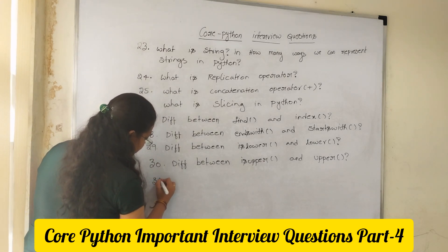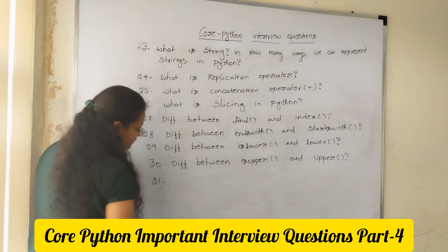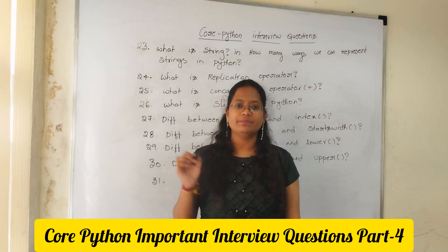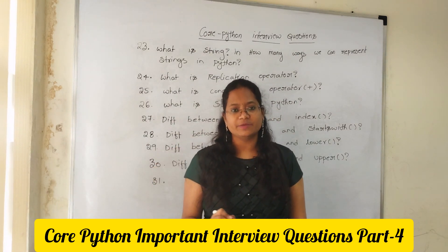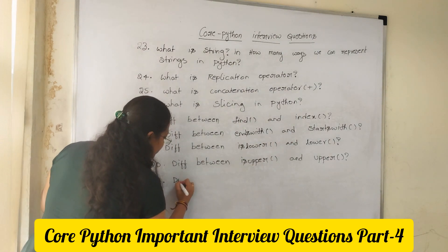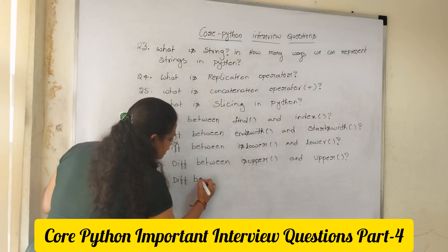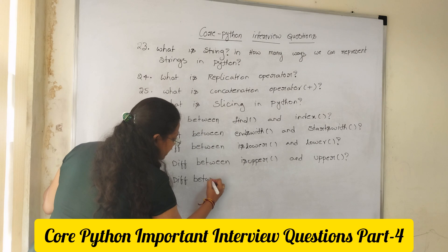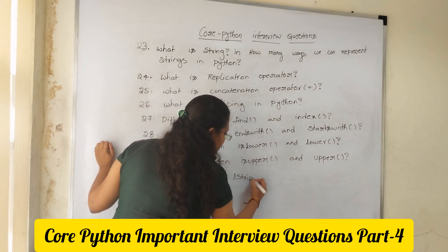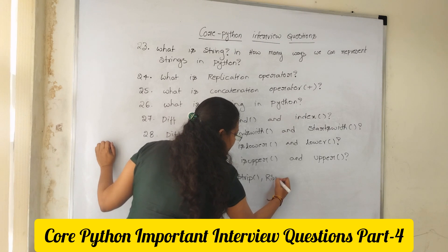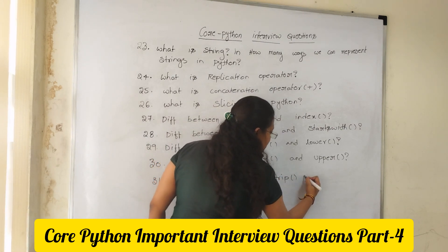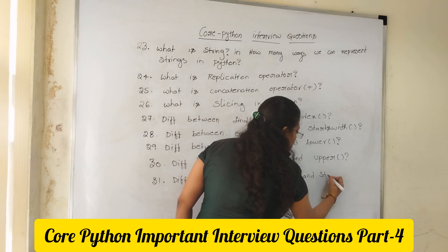Question 31: Here we are having L-strip, R-strip, and Strip methods in strings. Differentiate between the L-strip method, R-strip method, and Strip method.